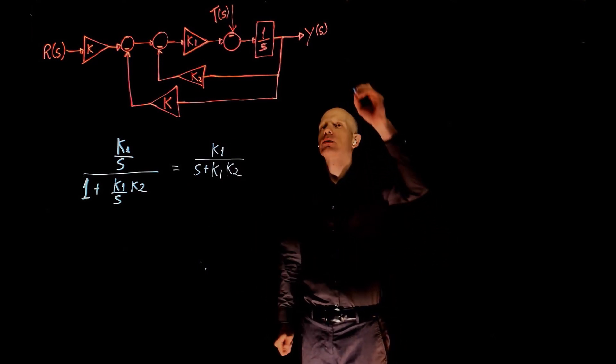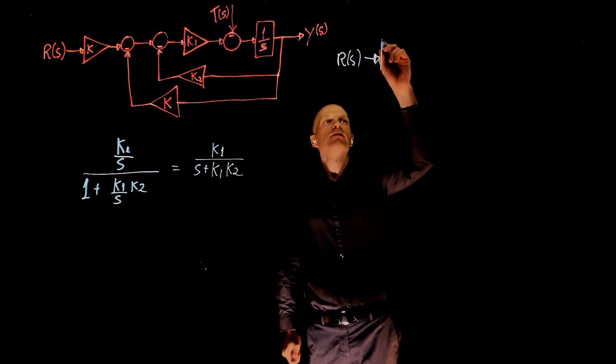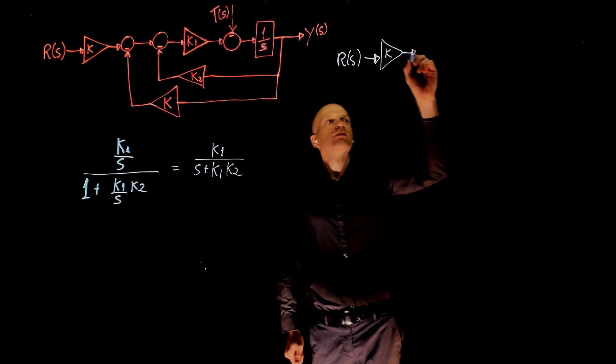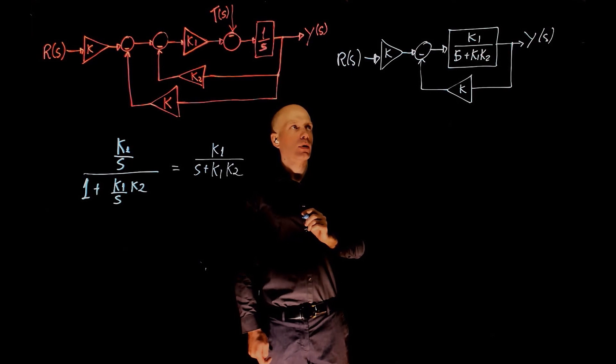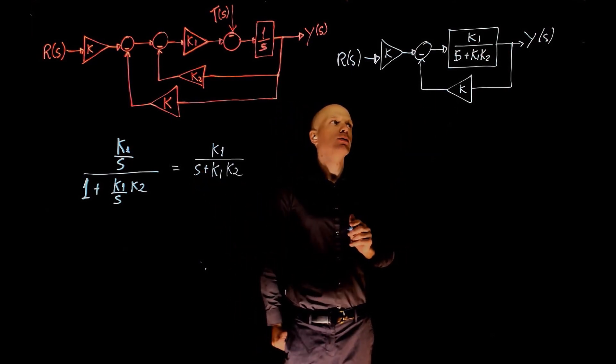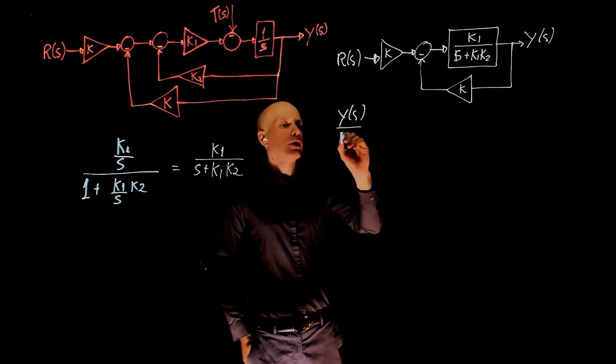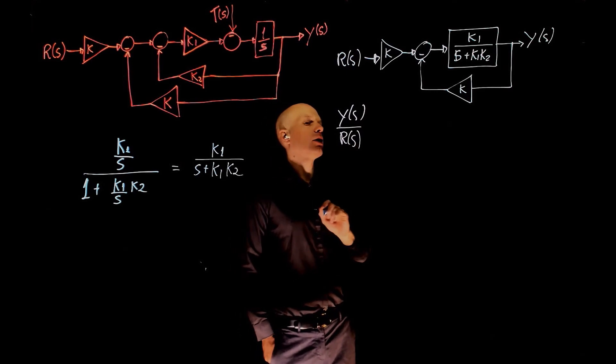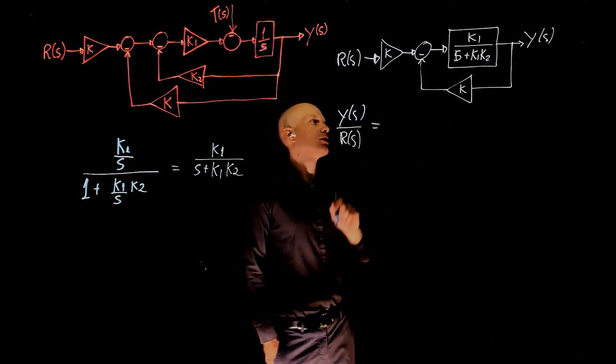We can now rewrite the block diagram as r of s times k, and now use the function that we just found. Here we have another feedback loop, and I'll directly find the relation between y of s and r of s by eliminating that feedback loop and multiplying everything by k because k is in the line here.